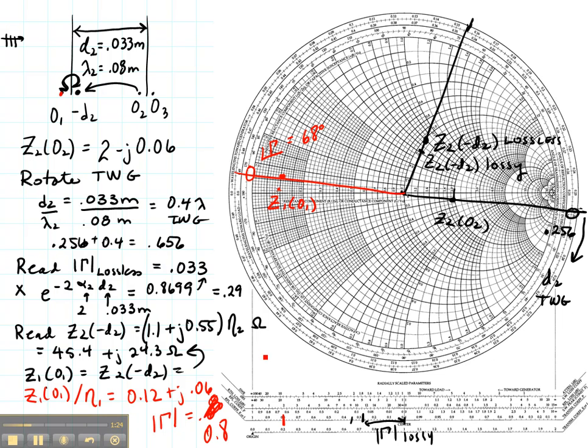So now we know the reflection coefficient at O1, which is the major reflection coefficient we need to know to understand what reflected field is coming back in this direction, is 0.8 at an angle of 68 degrees.